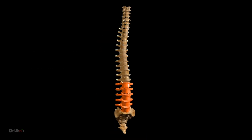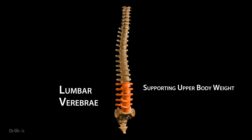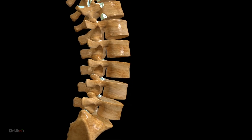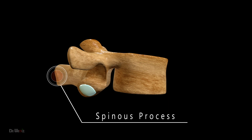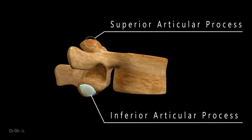The lumbar vertebrae are the five largest and strongest vertebrae in the lower back region of the vertebral column, responsible for supporting the weight of the upper body and allowing for movement and flexibility of the lower back. Each lumbar vertebra has a number of distinct features that contribute to its function. The spinous process, located at the back of each lumbar vertebra, protrudes posteriorly and provides attachment points for muscles and ligaments. On each side of the lumbar vertebrae, there are superior and inferior articular processes, which articulate with the adjacent vertebrae. The superior articular process is directed posteriorly and medially, while the inferior articular process is directed anteriorly and laterally.